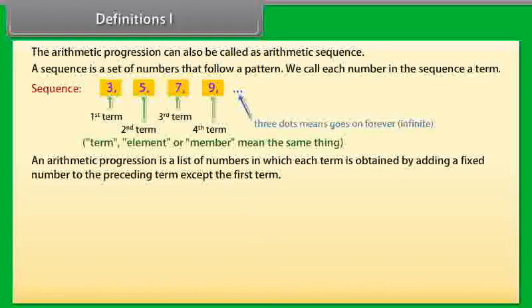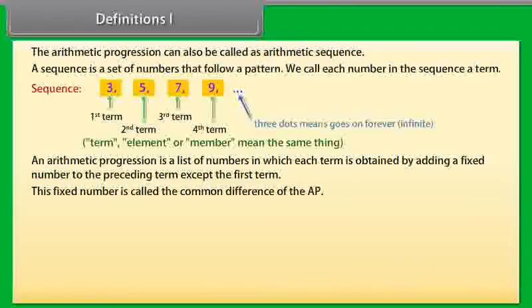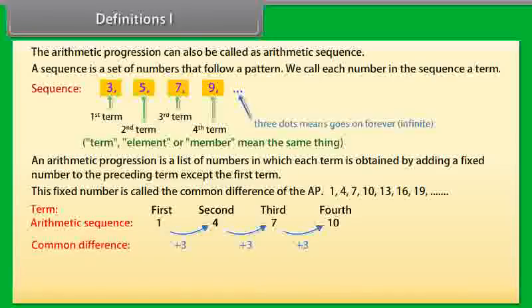An arithmetic progression is a list of numbers in which each term is obtained by adding a fixed number to the preceding term except the first term. This fixed number is called the common difference of the AP. Look at this sequence. We can see here that the common difference is 3. In general, we can write an arithmetic sequence like this: A, A+D, A+2D, A+3D and so on.